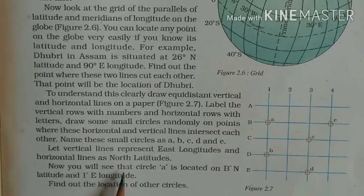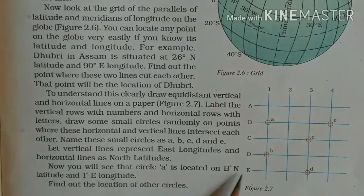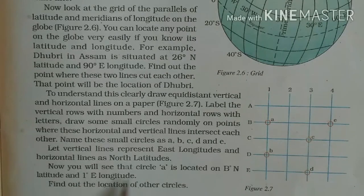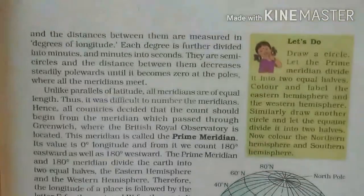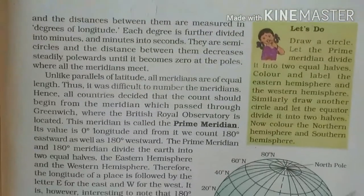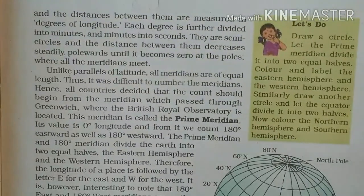Draw some small circles randomly on points where these horizontal and vertical lines intersect each other. Name these small circles as A, B, C, D and E. Let vertical lines represent East longitudes and horizontal lines represent North latitudes. Circle A is located on B North latitude and 1 East longitude. Find out the location of other circles.